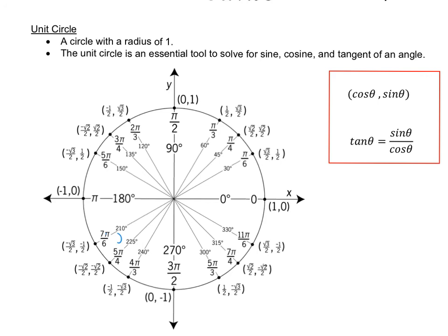To summarize: we've learned the first and second quadrant, which is a great start to understanding how the unit circle is derived and built. The first quadrant has all positive coordinates. The second quadrant has negative x values and positive y values. The coordinates are associated to cosine and sine — cosine is always the x value and sine is always the y value. Tangent is sine over cosine, or y over x. More on that later.